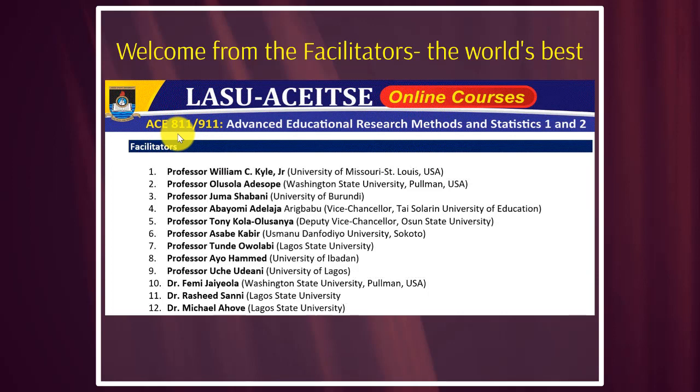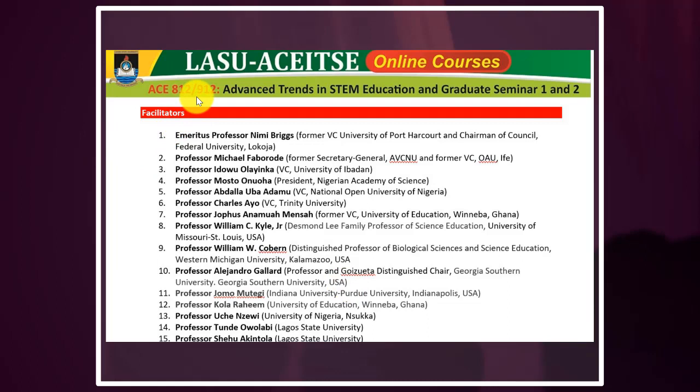You can see them all for ACE 811/911 — Advanced Educational Research Methods and Statistics 1 and 2. These are the world's best from the U.S., from Burundi, and as you can see, all of them. You've been interacting with them. You're very lucky, and I am also very lucky that we are part of this exciting project.